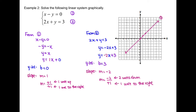Now let's graph line 2. We start with the y-intercept at y equals 3. Then we use the slope — two units down from the y-intercept and one unit to the right — that's our next point. And again, from this point, two units down, one unit to the right. Make sure we label equation 2 at the end of the line. The lines intersect at (1, 1). Therefore, the solution is at (1, 1).